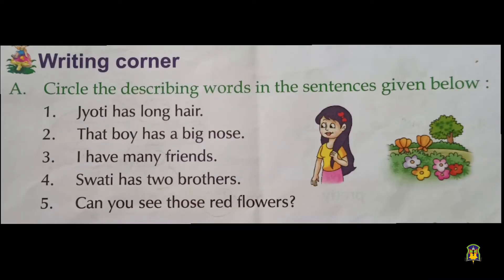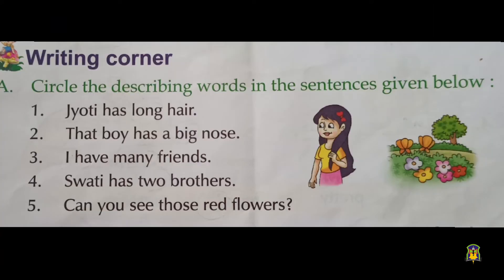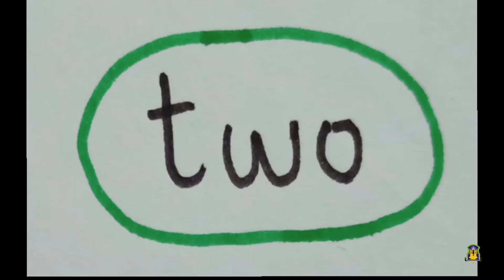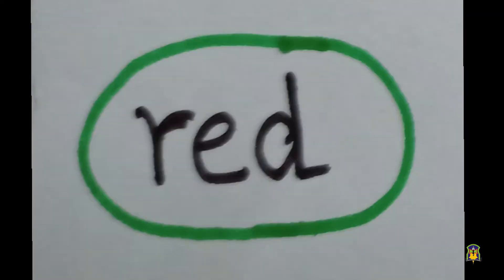Third one: I have many friends. What's the answer? Many. I have many friends. Fourth one: Swati has two brothers. What's the answer? Two. Swati has two brothers. Fifth one: Can you see those red flowers? What's the answer? Red. Red is the describing word. Can you see those red flowers?